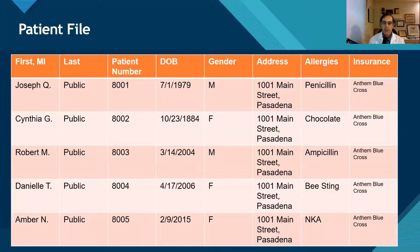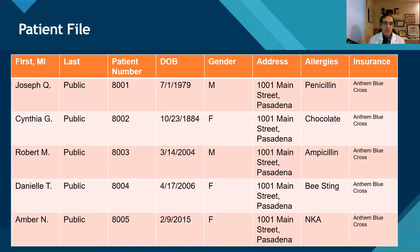A patient file might look like this, with the name of the patient and their ID number, date of birth, gender, address, allergies, and insurance.